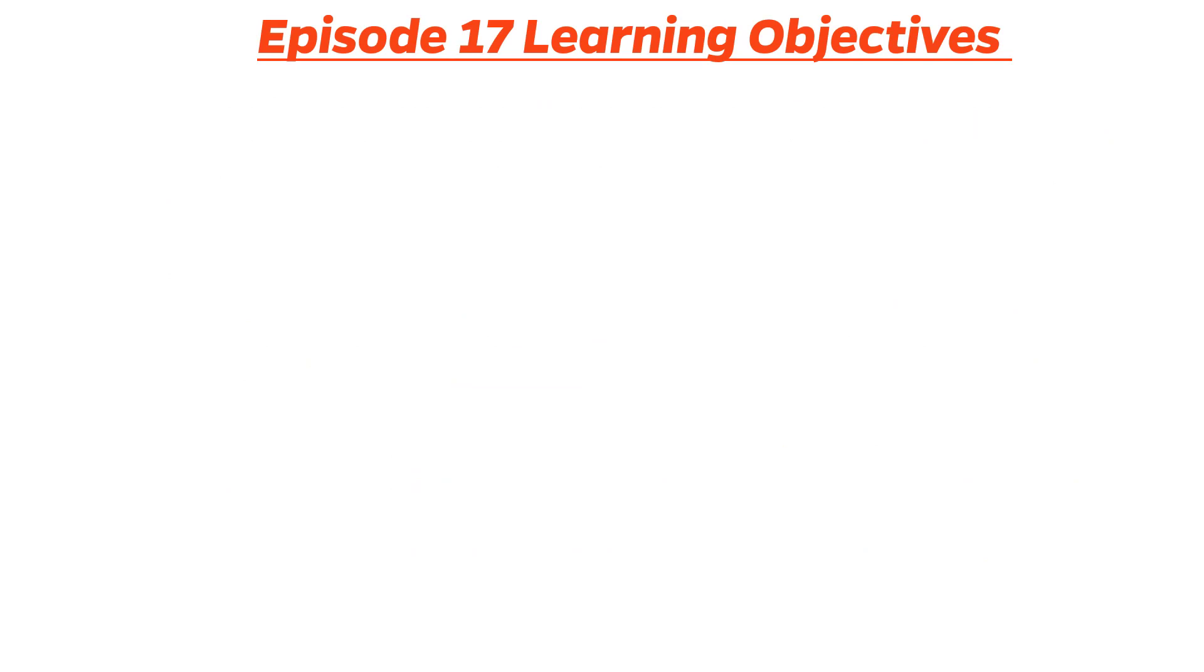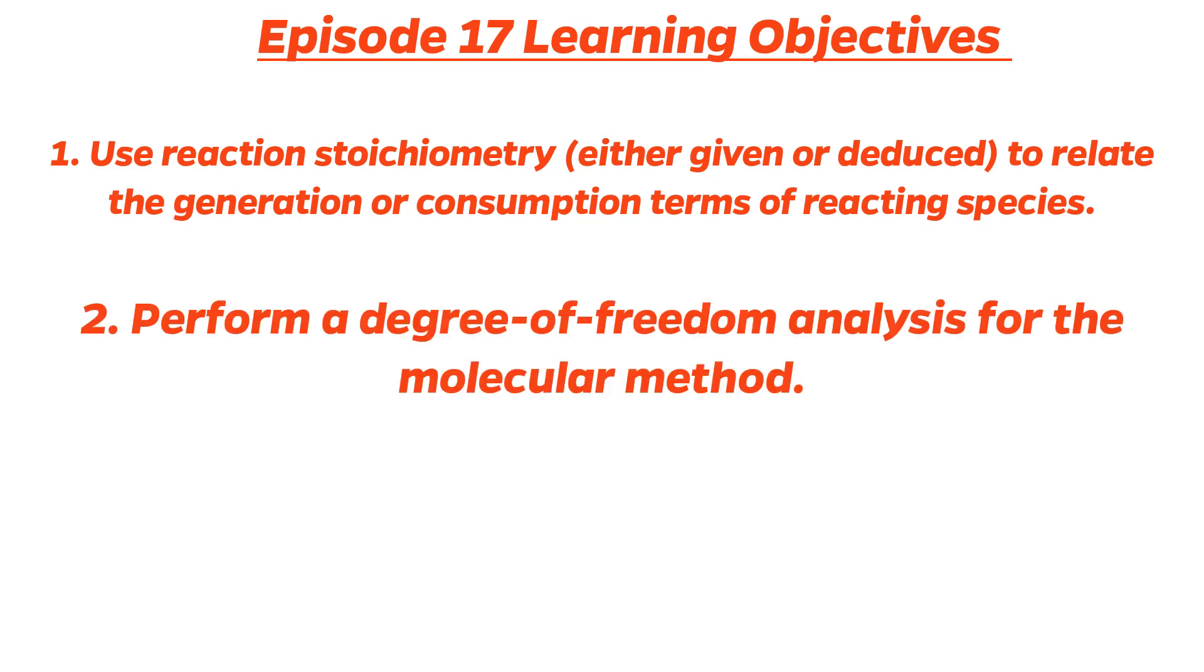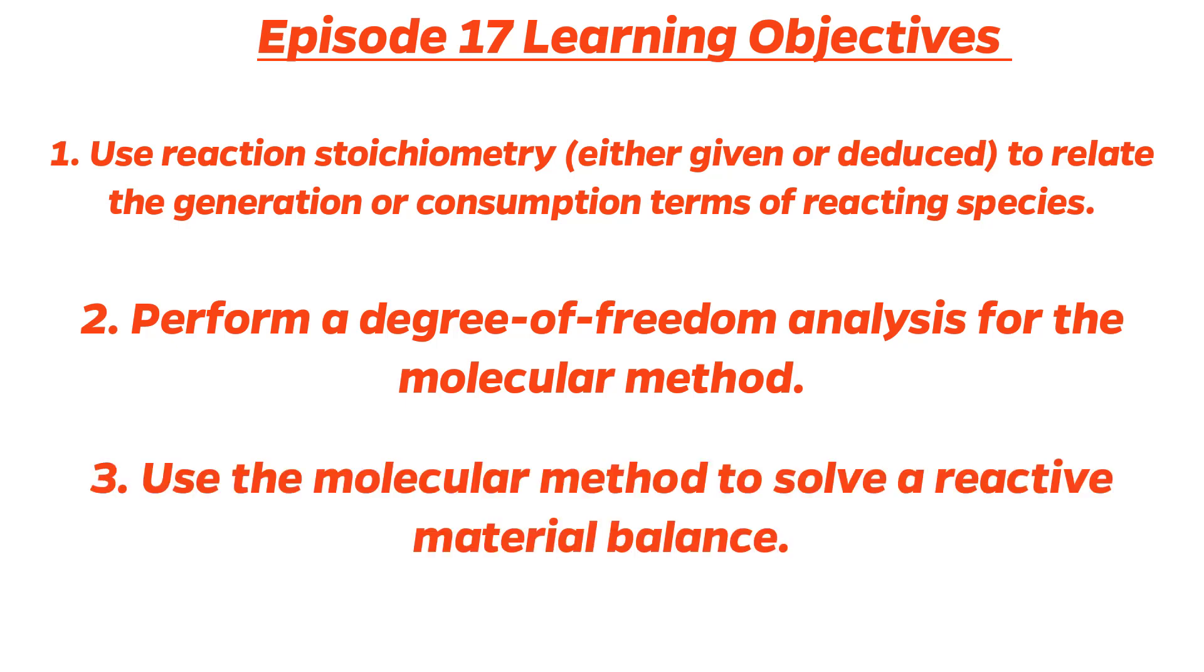Episode 17 Learning Objectives. Now that this episode is over, you should be able to: 1. Use reaction stoichiometry, either given or deduced, to relate the generation or consumption terms of reacting species. 2. Perform a degree of freedom analysis for the molecular method. And 3. Use the molecular method to solve a reactive material balance problem.